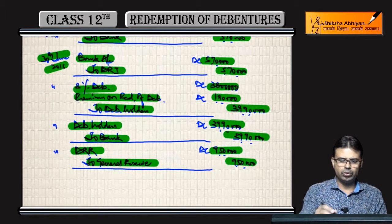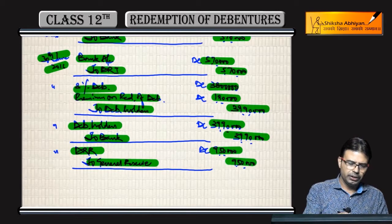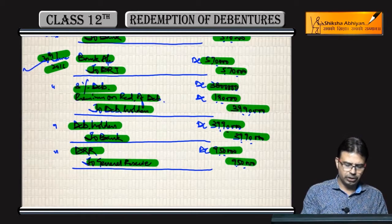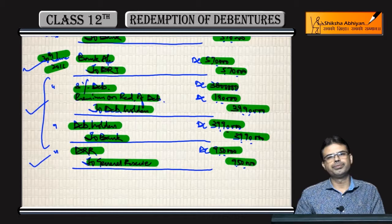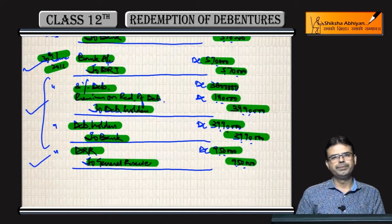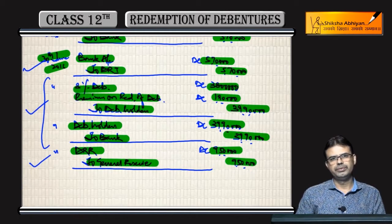So these four entries you can see: investment sold, DRR transferred to General Reserve, amount made due to debenture holders, and payment made. Right? Okay? Done.